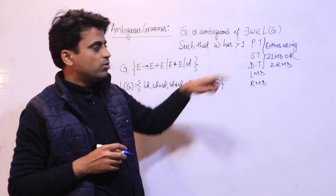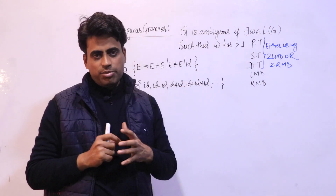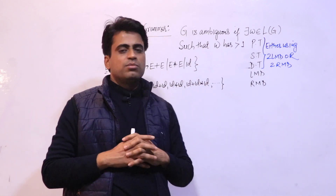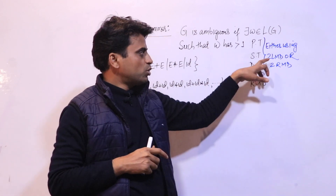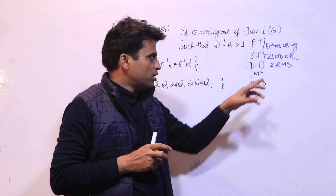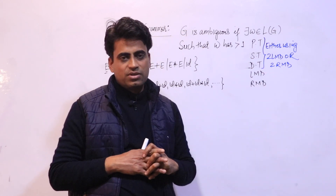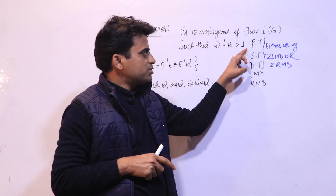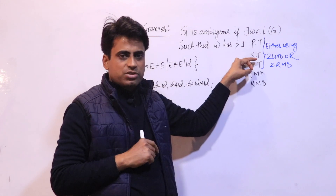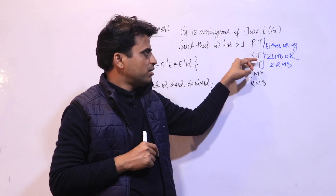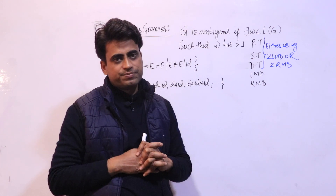देखिएगा — parse tree, syntax tree या derivation tree — अगर एक से ज्यादा parse tree है, तो वो दोनों LMD process से या RMD process से बने होने चाहिए। तो अगर इस तरह के एक से ज्यादा parse tree हैं जो LMD या RMD process से बने हैं, तो उस grammar को ambiguous grammar बोलेंगे।